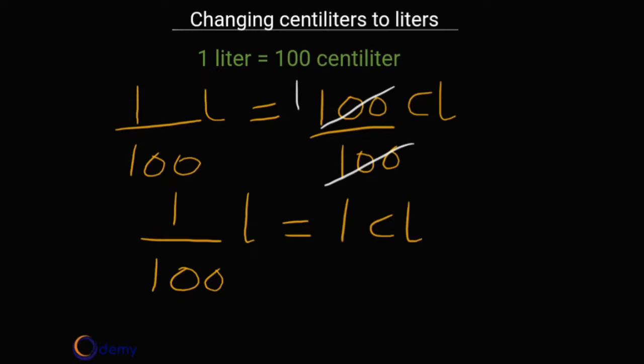So how then do we change our centiliter to liter? You divide the centiliter value by 100, just like we did here. What is the centiliter value here? One. So to change it to liters, you divide by 100.